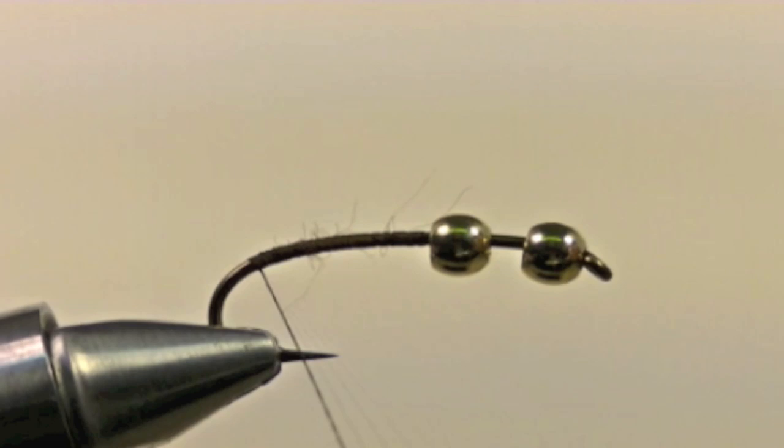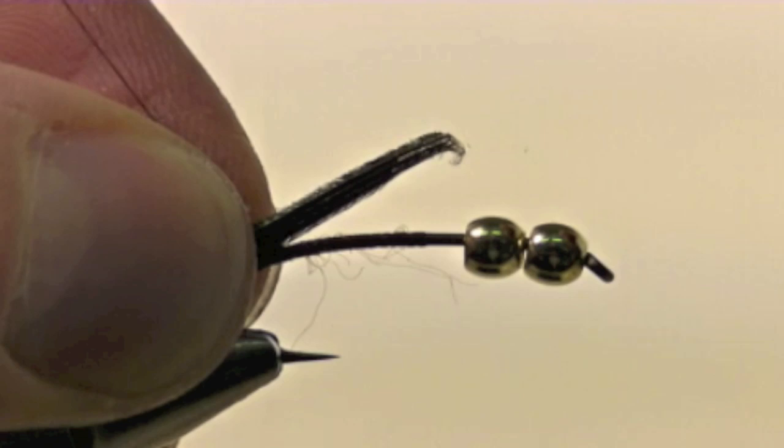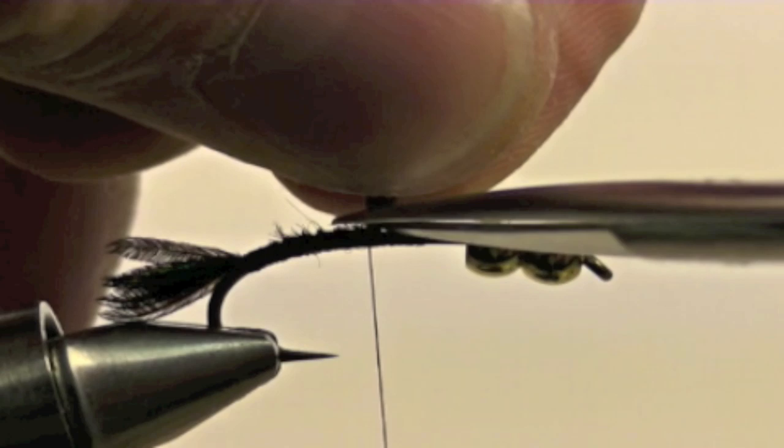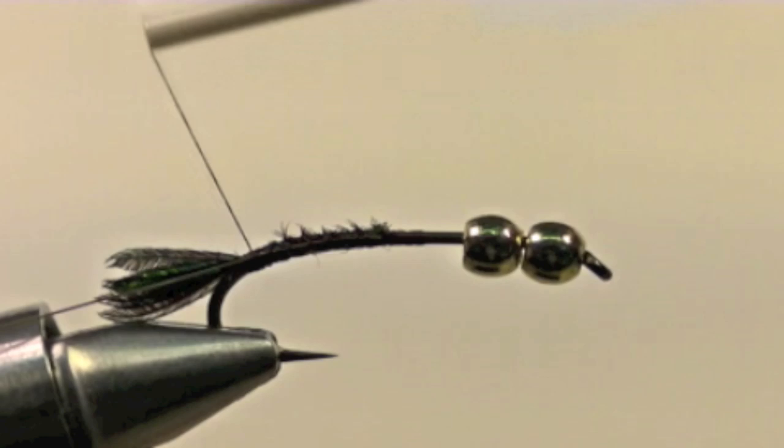Your thread should line up with about the barb of the hook. Take a small clump of peacock swords and tie them in at the bend of the hook. These should be approximately a quarter the length of the shank of the hook. Tie down the peacock swords along the shank and clip them off about mid hook.